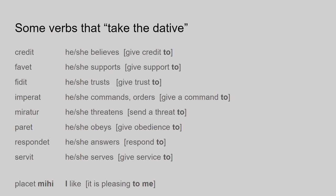Important note: some verbs in Latin take the dative, meaning when you see them you should expect a noun in the dative case. Here is a list of some you might need. In English it can be difficult to see why some require a dative noun, but the more literal translations in square brackets make it clearer. For 'credit,' it means 'believe,' but if you say 'give credit to,' you can see why a dative noun follows. For 'imperat,' we say 'she commands,' but literally 'she gives a command to' — showing the dative. You don't need the bracketed translations; the simpler ones come first, but they illustrate why these verbs take the dative.